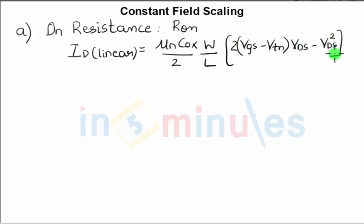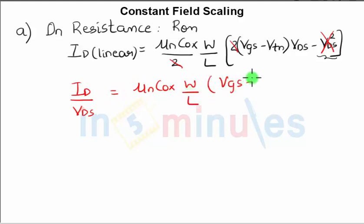When the transistor is operating in linear region, the value of Vds is very small, and hence Vds² is even smaller and can be easily ignored while finding the ON resistance. So ID/Vds equals μnCox · W/L · (Vgs - Vtn).